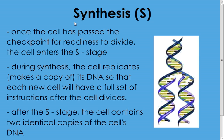After G1 we go on to the next stage: Synthesis, or S. The word synthesis refers to putting things together. In this case, what's being put together is DNA. It is during the S stage that the DNA is copied and replicated so that each new cell will have a full set of instructions once the cell divides. DNA carries all the codes and information for what the cell needs to do, and it's important each new cell has a full copy. After the S stage, the cell will have two identical copies of its DNA.